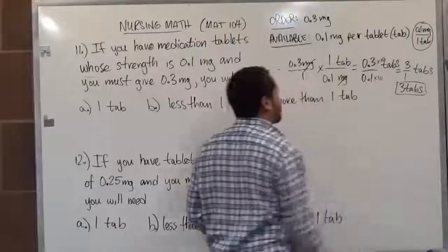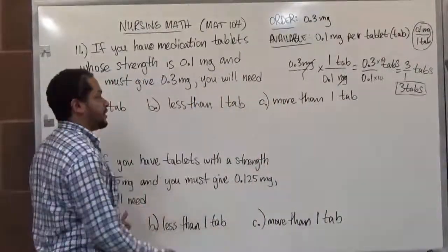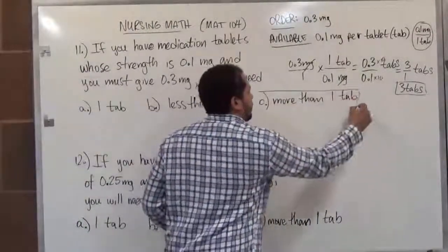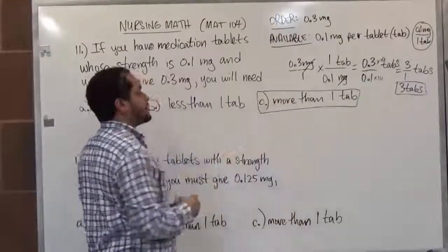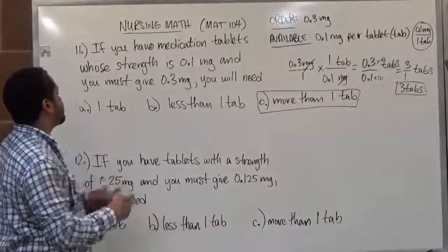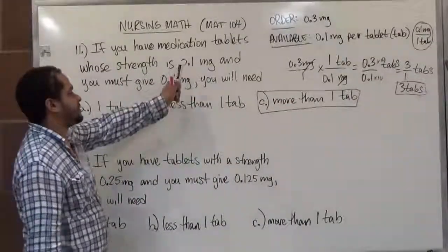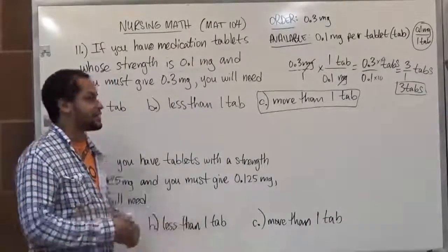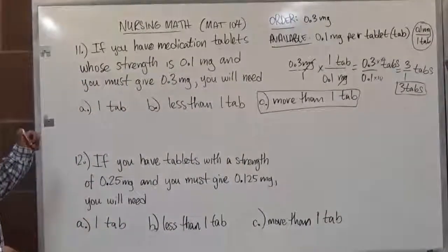We see that we're going to need more than one tablet for this problem. Our order says we need 3 tablets to cover the dosage of 0.3 mg, because each tablet has a strength of 0.1 mg, so they'll need to take three at a time.